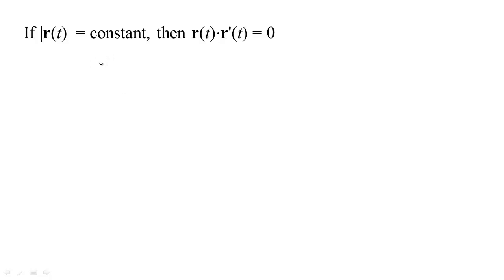This is a result that we'll use a lot when we analyze vector-valued functions, and so I wanted to show you where this comes from. It says that if the length of a vector is constant, then the vector is always orthogonal to its derivative.